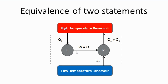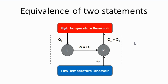Now let us see if the Clausius statement also gets violated. Let us give this work W produced to a heat pump to extract heat Q2 from the low temperature reservoir and deliver it to the high temperature reservoir. Therefore, the heat pump will deliver Q1 plus Q2 amount of heat to the high temperature reservoir. If we consider this as a single system as shown by the dotted line, Q1 amount of heat is taken from the high temperature reservoir and Q1 plus Q2 amount of heat is given to the high temperature reservoir.